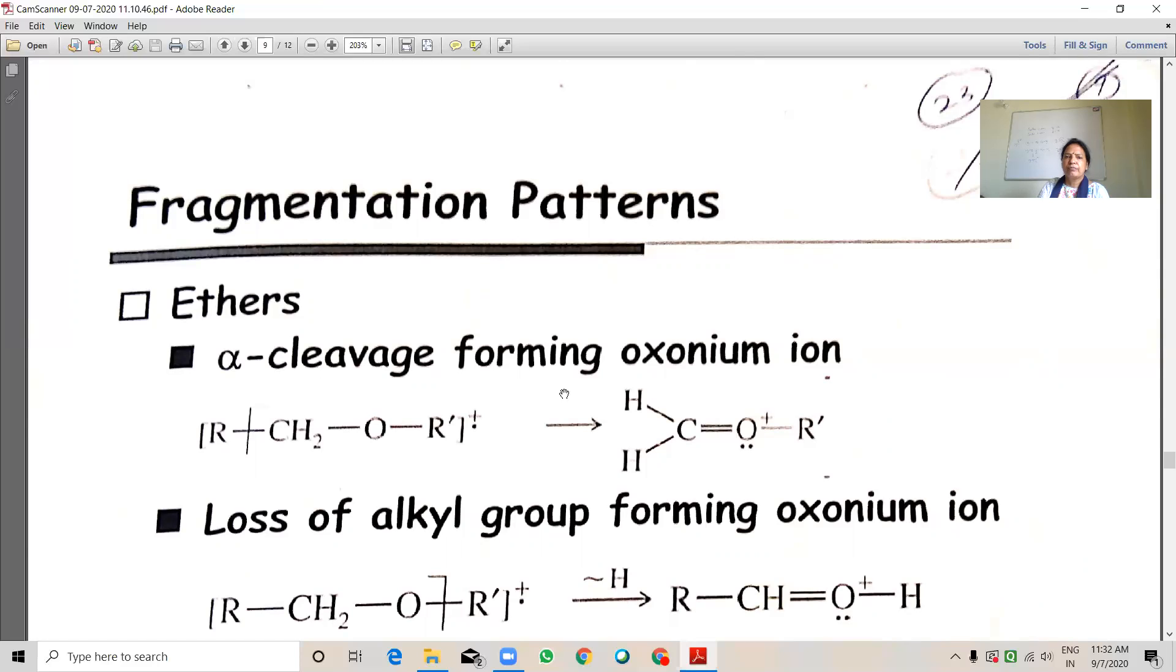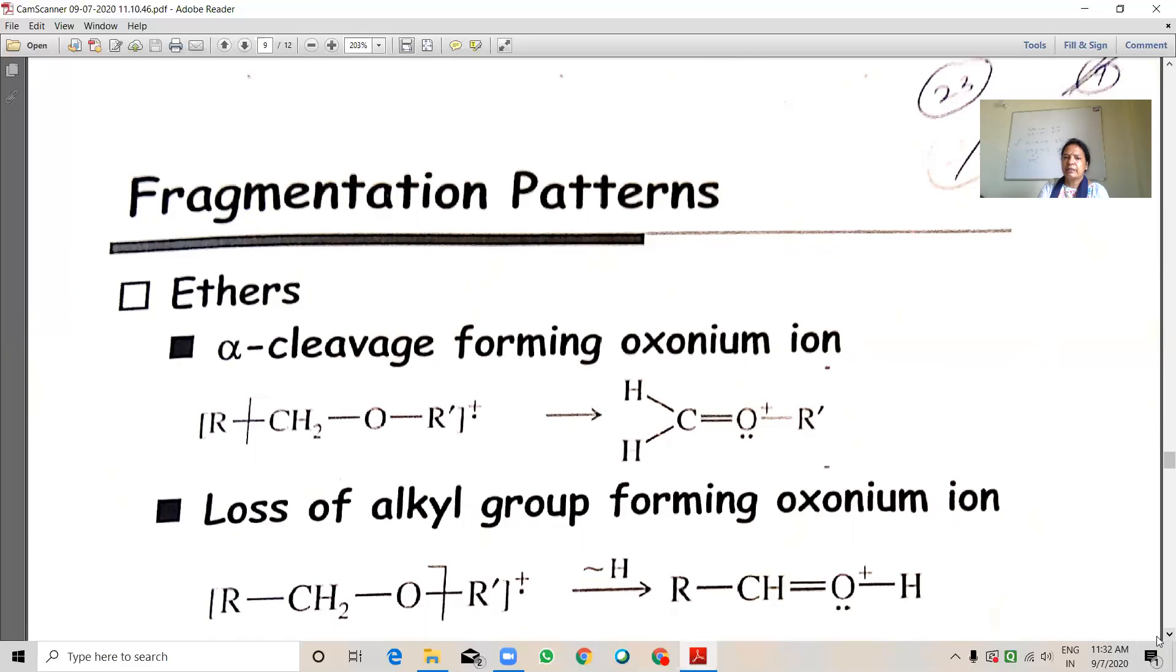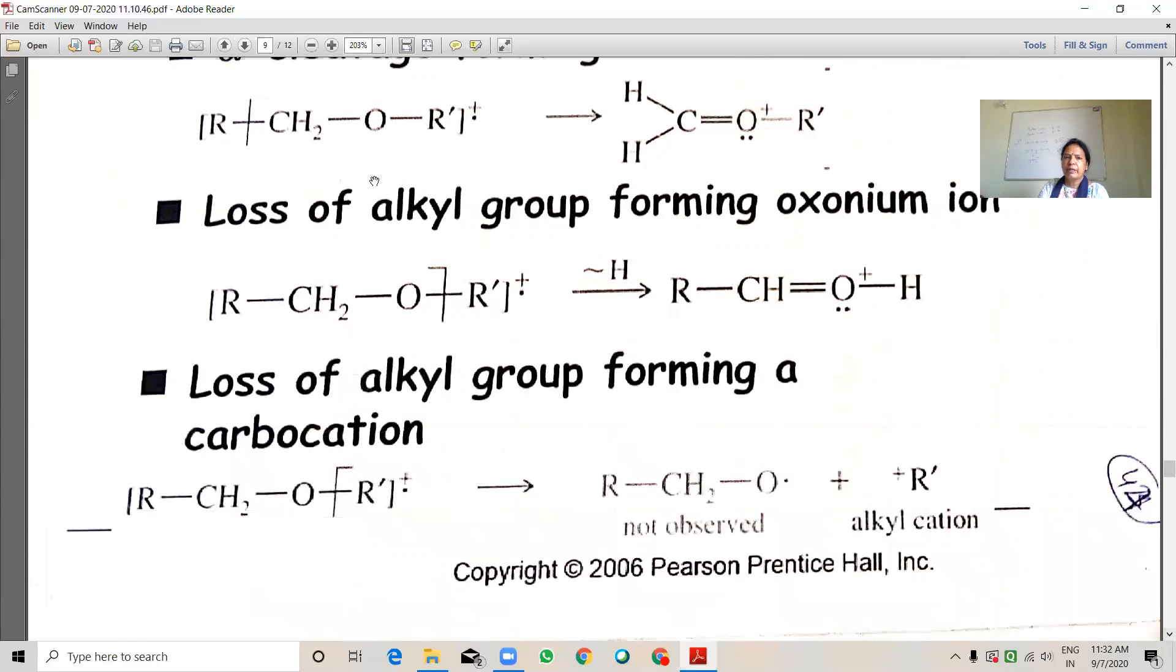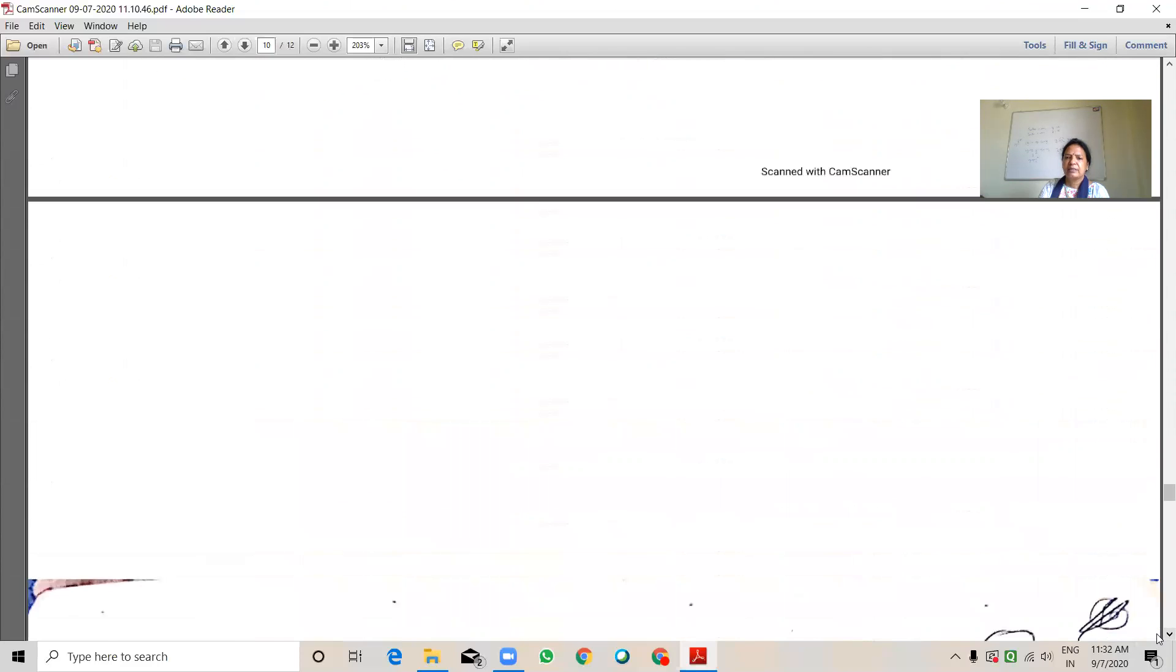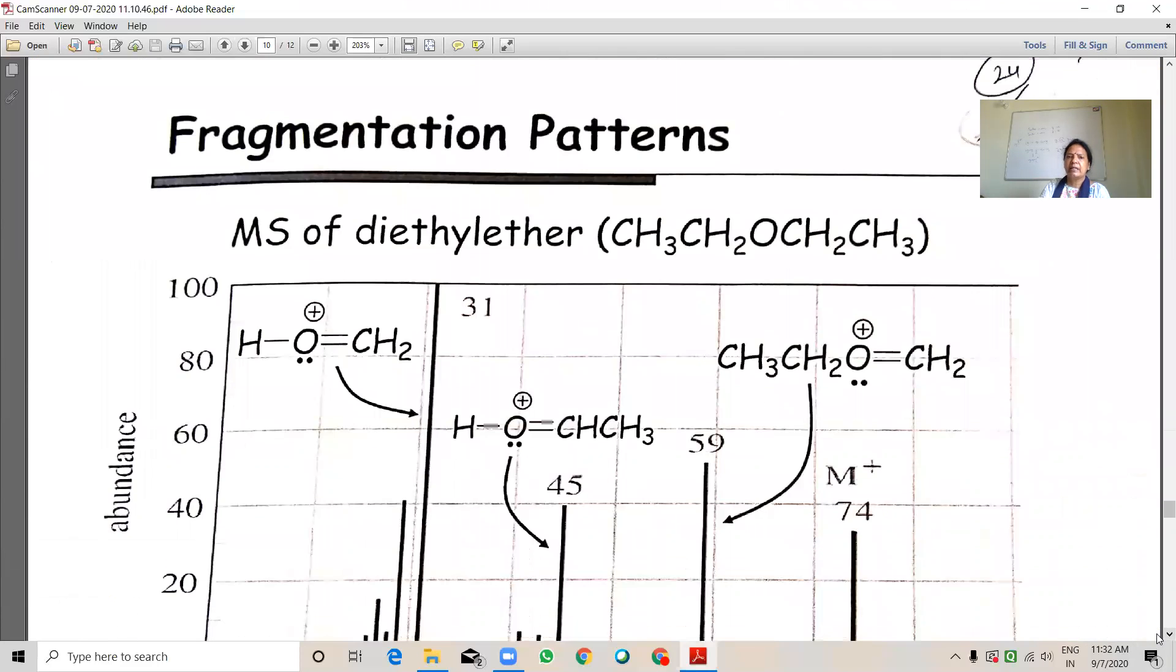Ethers cleavage, alpha cleavage forming oxonium ion and loss of alkyl group forming carbocation. So these are the fragmentation peaks observed in ether. See the example of diethyl ether. See here. Oxonium ion due to this it is observed in diethyl ether. It is a base peak.